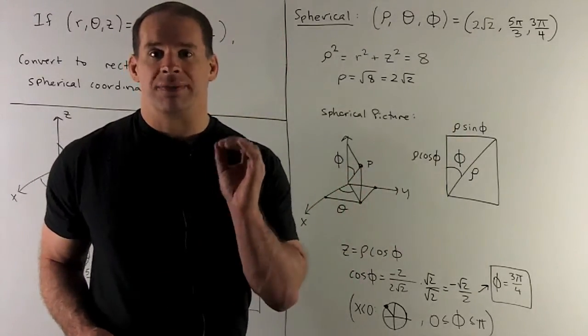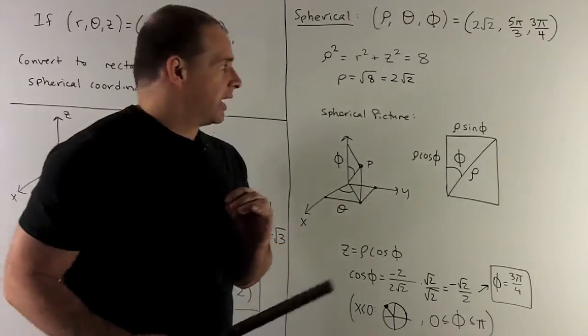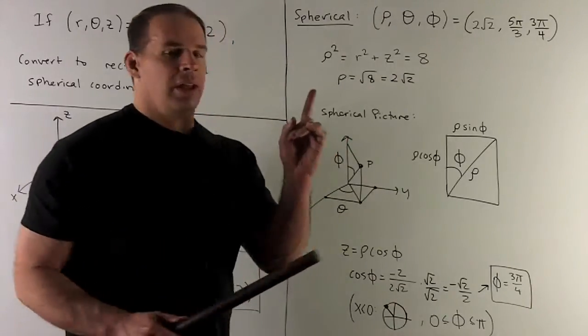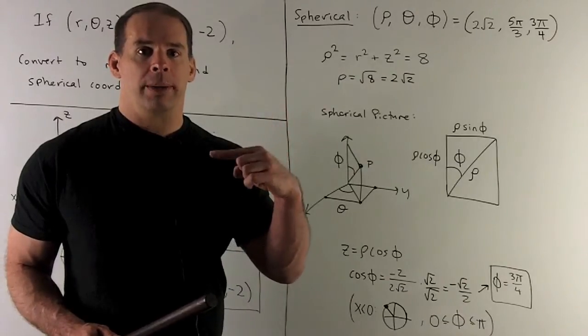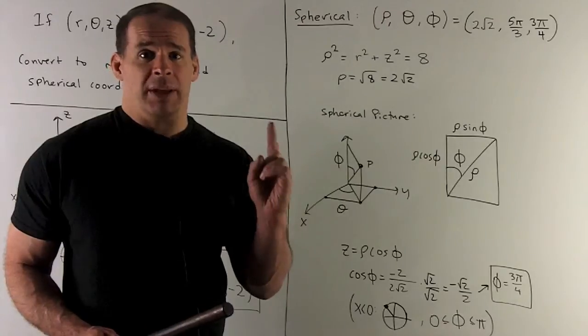All I need now is phi. What's the geometry for phi? So we're going to take the z-axis, take our point. That's going to form a plane. If I start at the positive z-axis and come down to our point along the plane, we're to sweep out an angle. That's going to be phi.